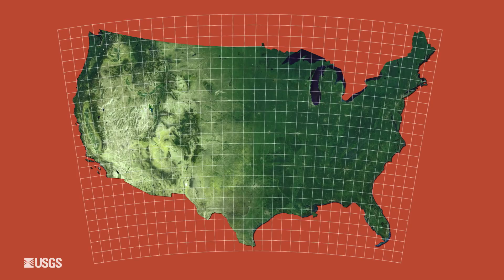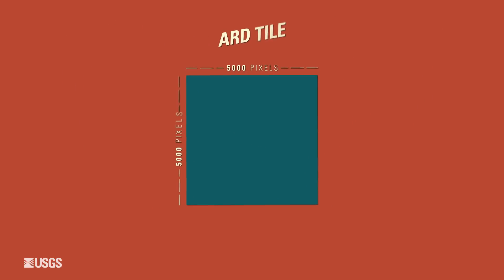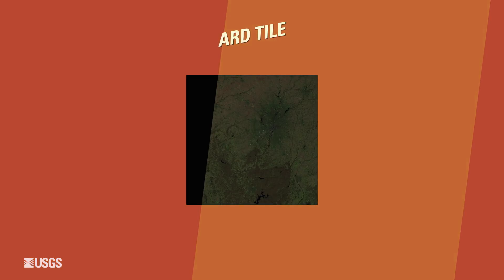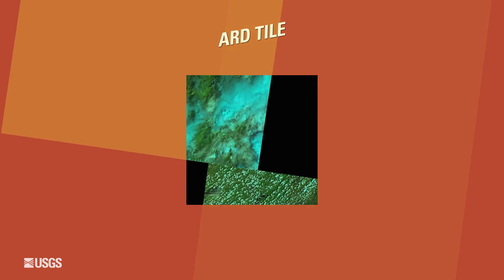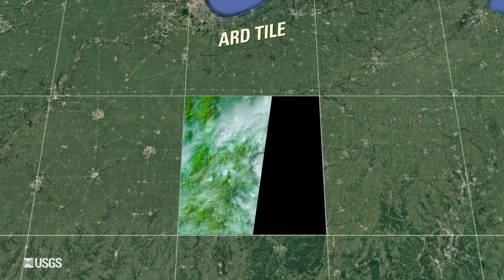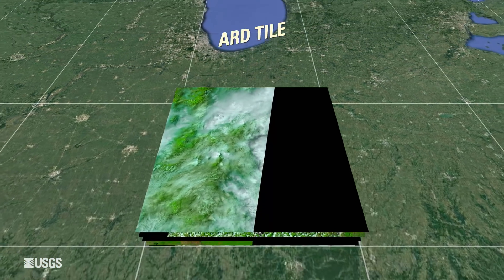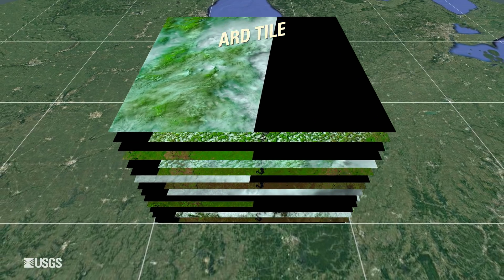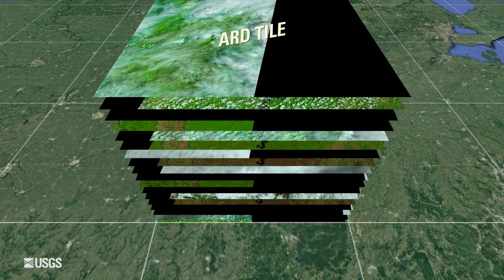Each ARD tile is a 5,000 pixel square. Every Landsat scene with data over that tile contributes to the stack. Whether the tile is full or partially covered, all the data Landsat acquires for an area is ready for analysis.